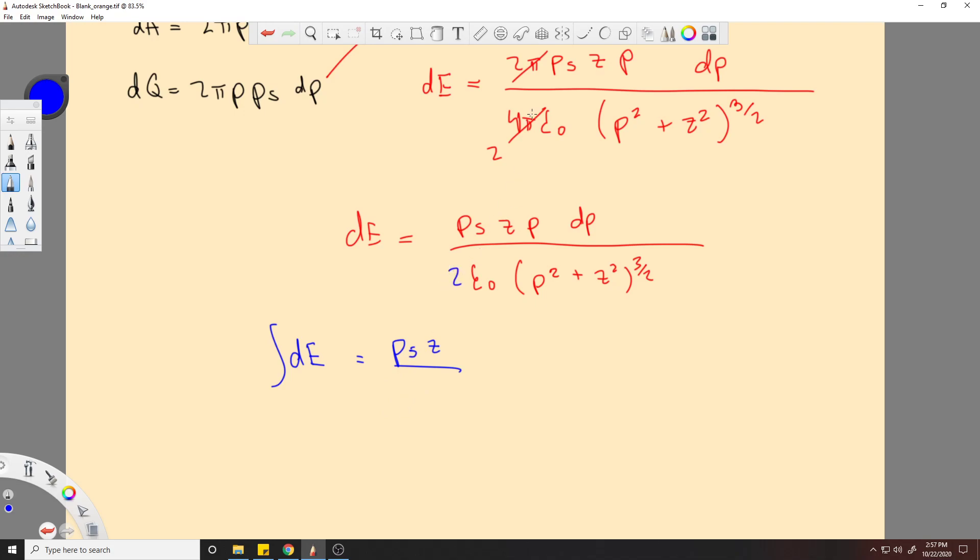Oh, there's a 2 here, sorry. 2 epsilon naught is constant. And that's everything that's constant. The rest would be integral, and this would be a rho. So rho squared plus z squared, to the 3 halves, d rho.